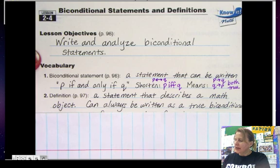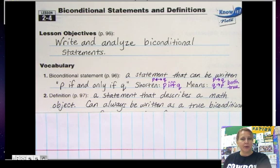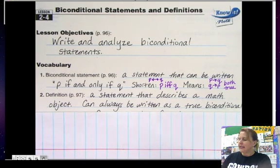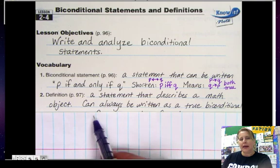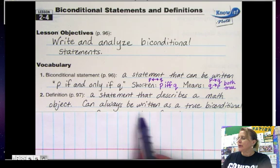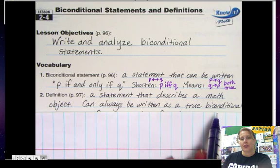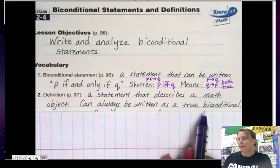Next definition is the word definition, and it is a statement that describes a math object. It can always be written as a true biconditional, and we'll do another couple of examples next.